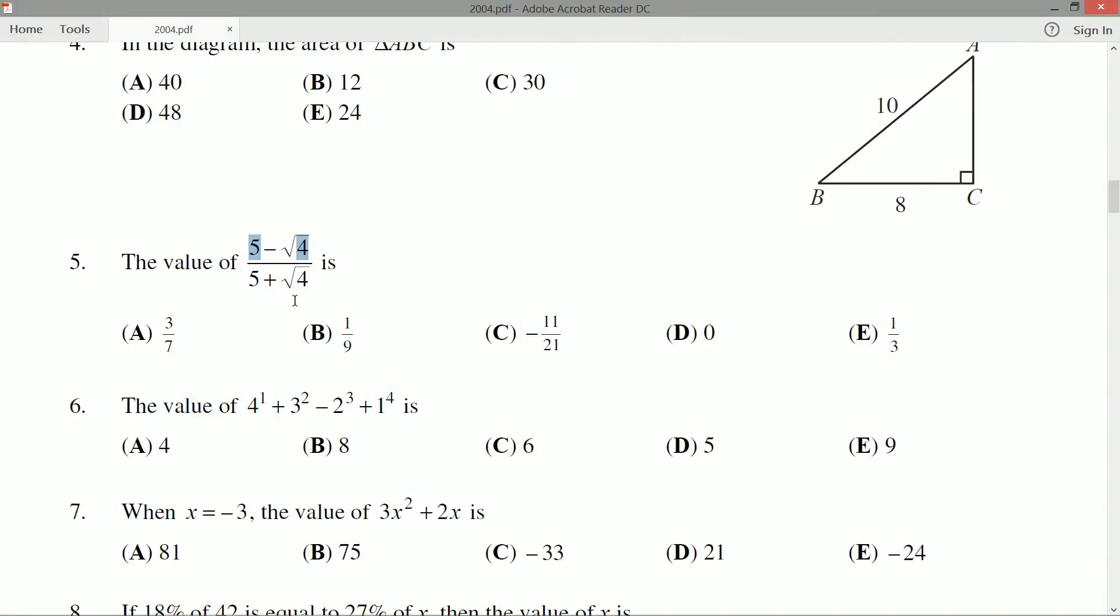This is a basic simplification question. I'll handle it right now. 5 - √4. Hopefully we all know that the square root of 4 is 2.